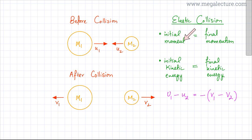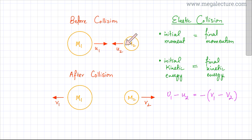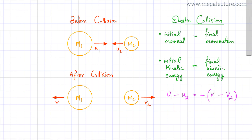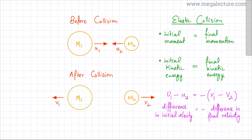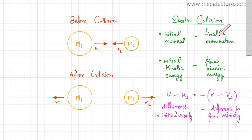Based on these two points — that momentum is conserved and kinetic energy is conserved — I'm going to derive the equation: U1 minus U2 equals minus (V1 minus V2). Here U1 and U2 are the initial velocities of M1 and M2, and V1, V2 are their final velocities after collision. The difference in initial velocity equals the difference in final velocity, except for a minus sign because the direction of velocity changes after collision. This is the equation we plan to derive.